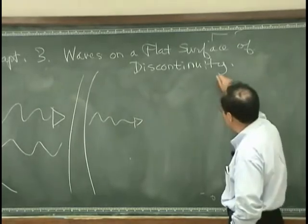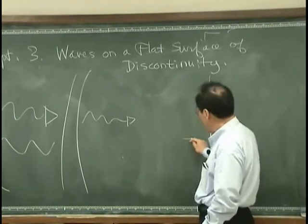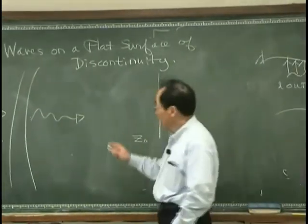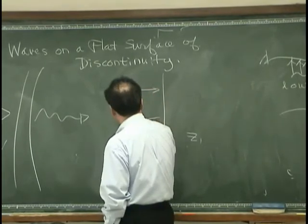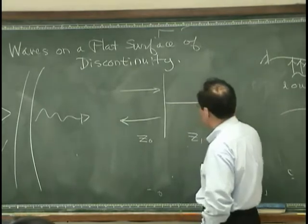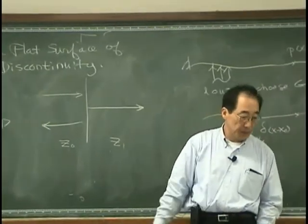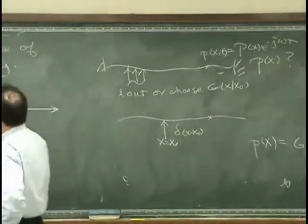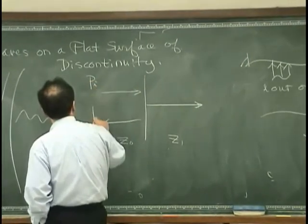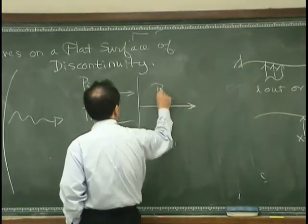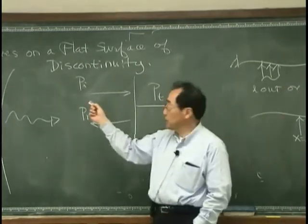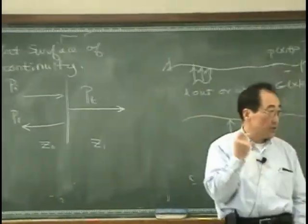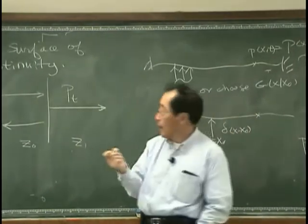Let's start with the case when we have two different media with impedances Z0 and Z1. When we have an incident wave, we will have a reflection and a transmission. I denote the incident pressure field, the reflected pressure field, and the transmitted pressure field using indices I, R, and T.